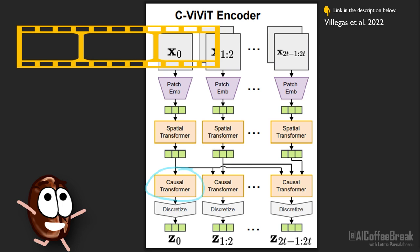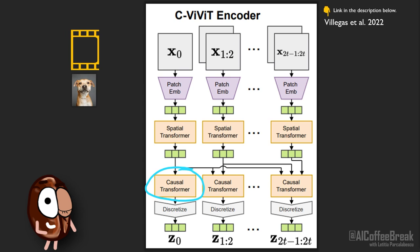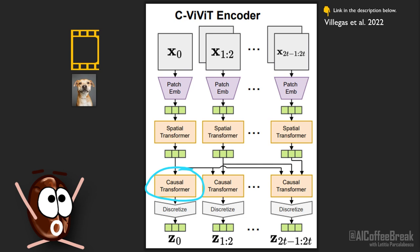It means that the temporal transformer layers on the image do not do much, but it also means that the authors can train CViViT not only on videos but also on images, extending the amount of data immensely and therefore teaching CViViT as much about the visual world as possible.